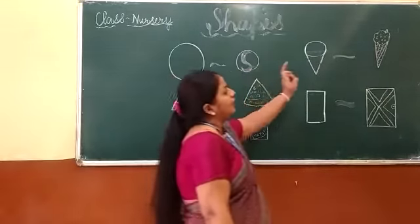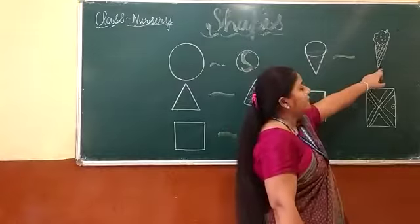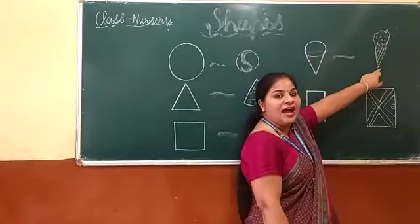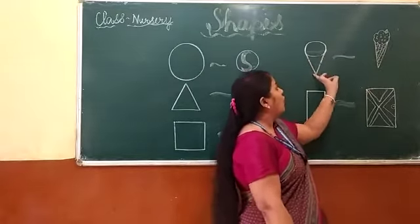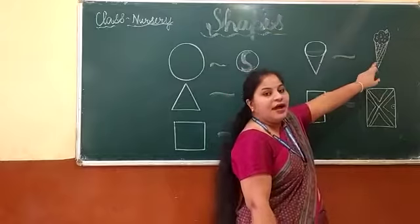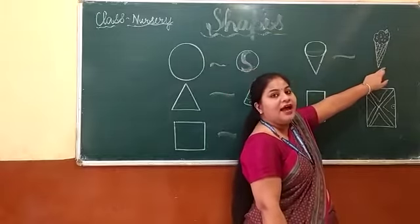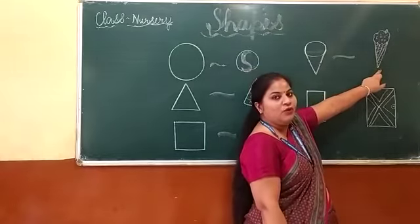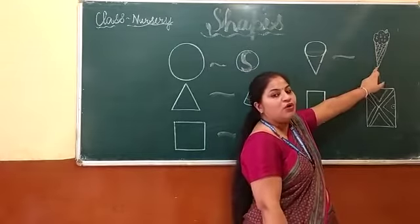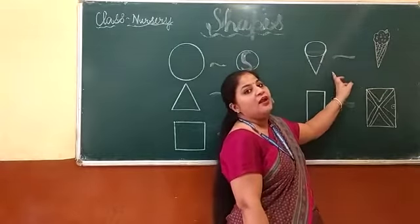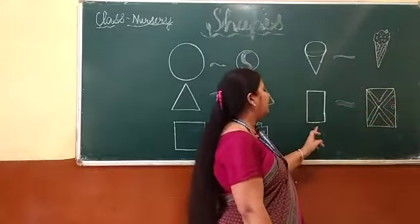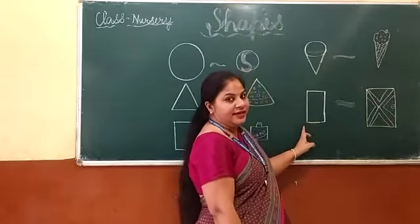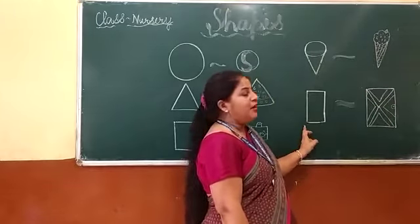And here is an ice cream cone. This is an ice cream cone. Ice cream cone looks like a cone shape. And this is a rectangle shape.